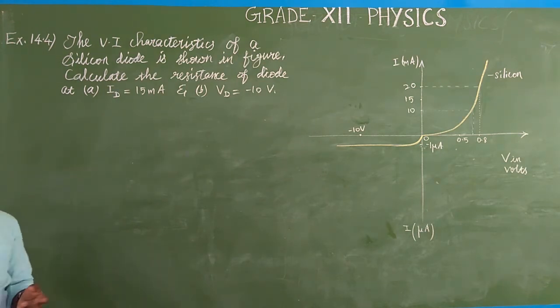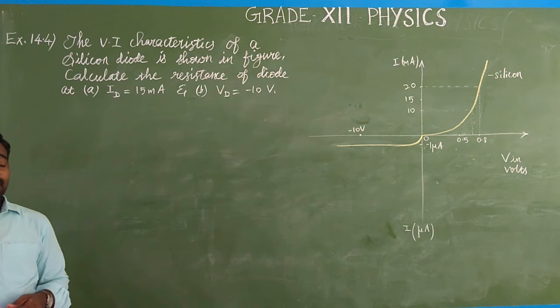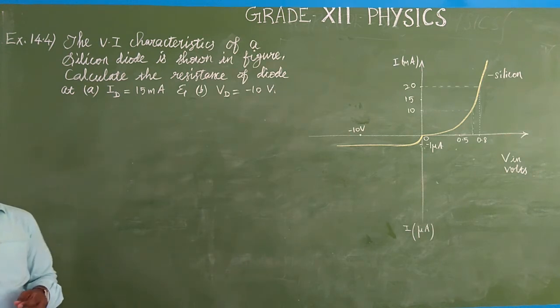Zener diode is deleted from the portions as well as the transistors. Now we are going to see the book example.